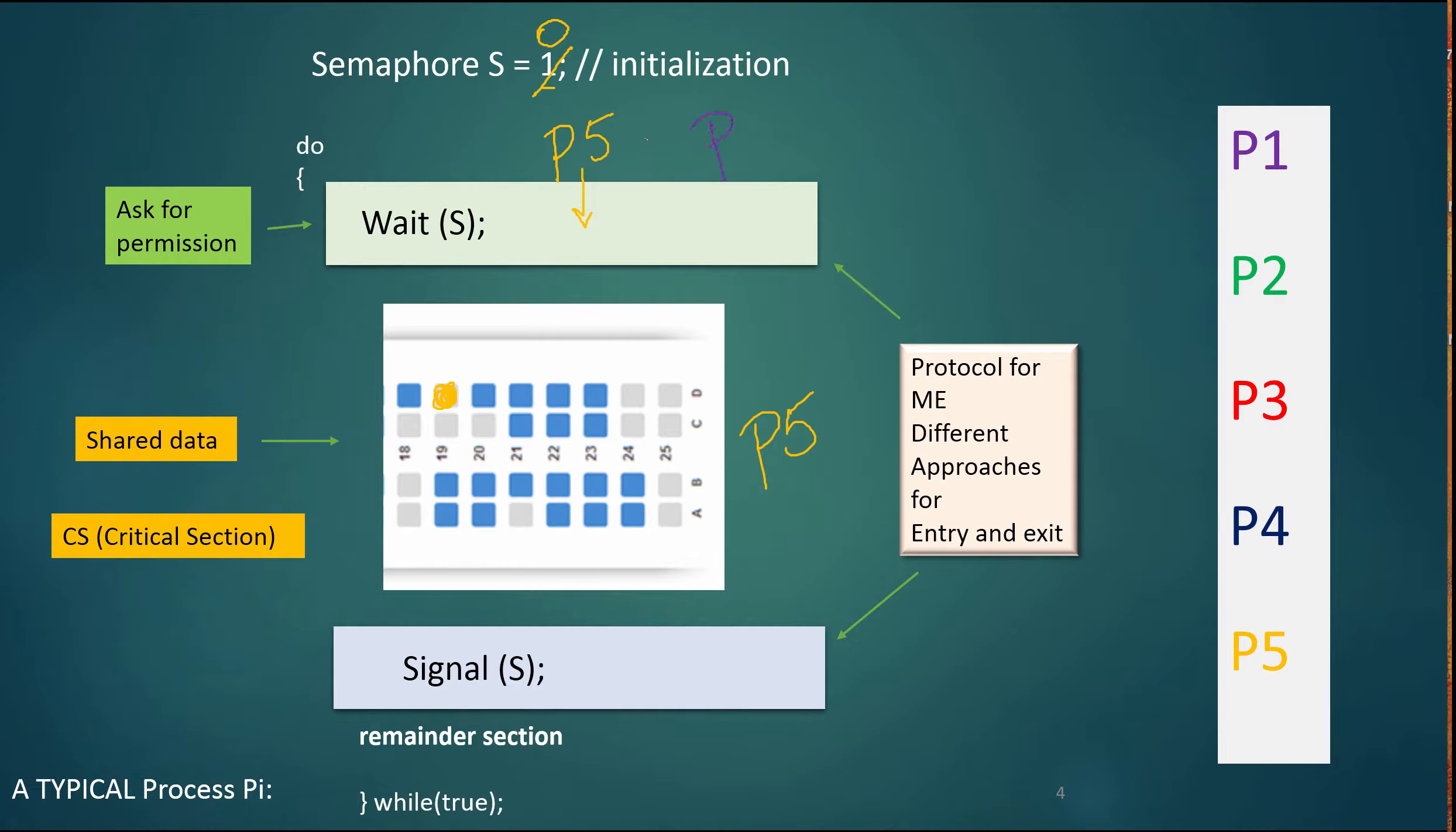So P1 could come along, P5 is already in there, P1 could come along. We could also have P3 come along here and they're both sitting there waiting because P5 is in there finding the seat and then picking the seat, setting the flag that the seat has been booked and then when P5 is done, P5 will then signal and leave.